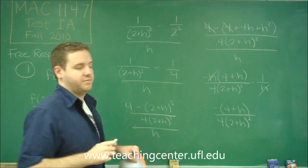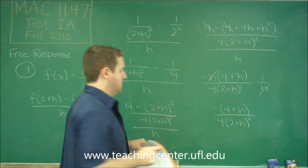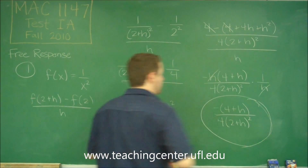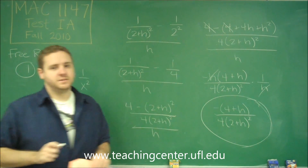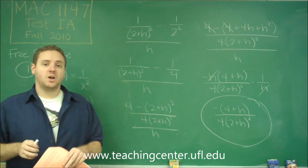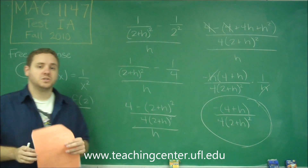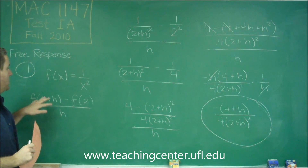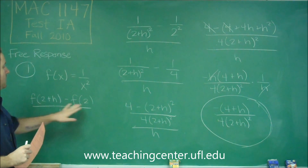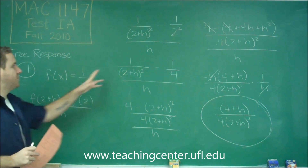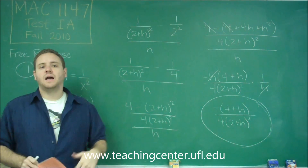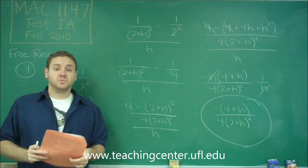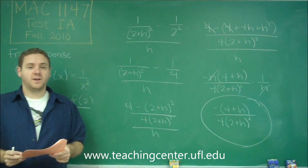That's as simplified as we can get it, so our final answer is negative (4 plus h) over 4 times (2 plus h) squared. In solving a difference quotient, all you need to do is make sure you plug in your values for x correctly, and then it just comes down to algebra and simplifying the fractions.